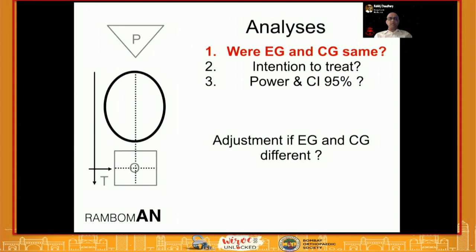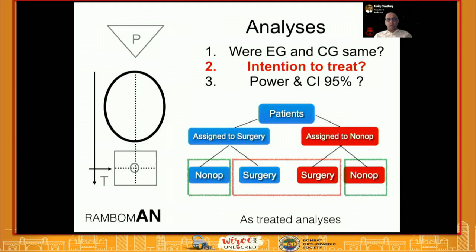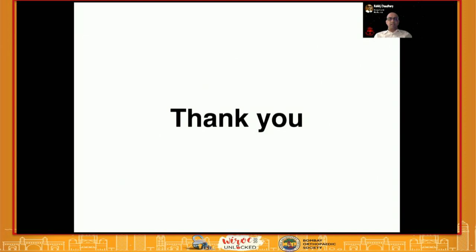The last part of the mnemonic is Analysis. First, check whether the exposure and control groups were similar at baseline, even in a randomized trial. Second is intention-to-treat: irrespective of crossover, people assigned to one group must be analyzed within that group. Analyzing patients in an as-treated fashion is a lower level of evidence and increases bias. Finally, check whether a 95% confidence interval was reported and whether an a priori power calculation was done to assess sample size. All these steps help you go through a paper systematically — critical appraisal is essentially about identifying systematic bias.